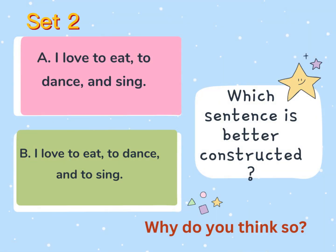How about this one? A: I love to eat, to dance, and sing. B: I love to eat, to dance, and to sing. Which sentence is better constructed? Why do you think so?